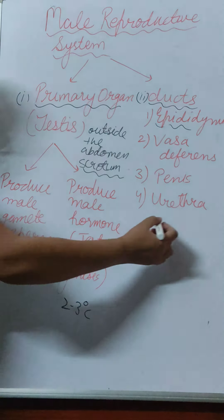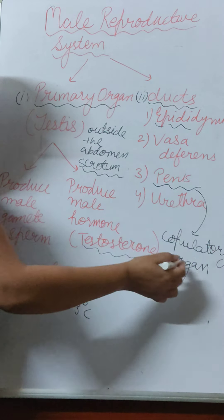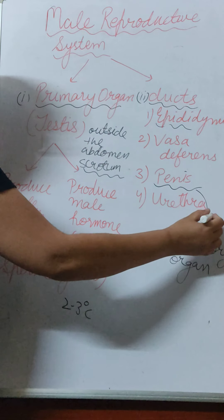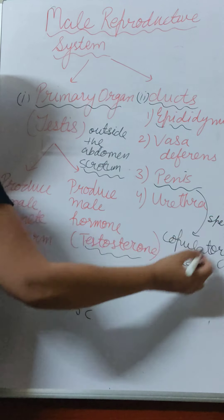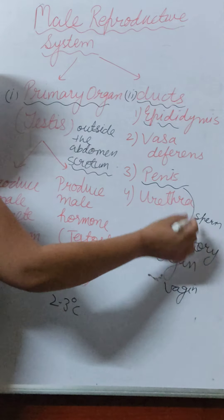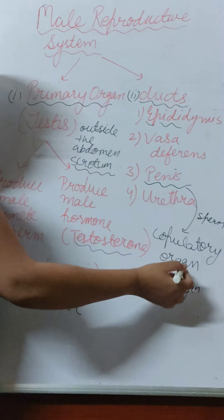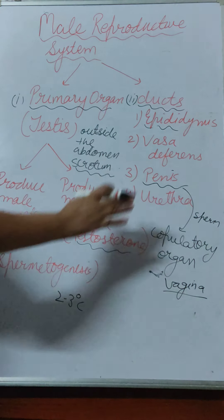The last part is the penis, which is the male copulatory organ. A copulatory organ is meant for deposition of sperm in the female genital tract — the organ used for transfer or receiving of the gamete. The penis transfers the sperm to the vagina of the female. That is why it is known as the copulatory organ.